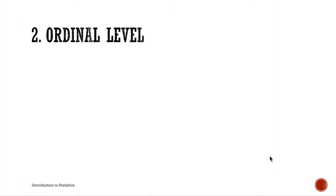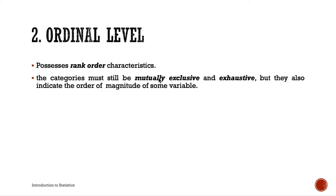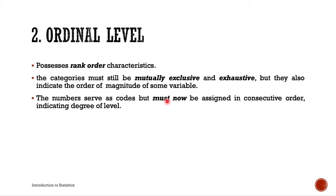Next is the ordinal level of measurement. The ordinal level possesses all the properties of the nominal level, but now it also possesses rank order characteristics. There are now ranks among categories. Categories must still be mutually exclusive and exhaustive, and they now indicate the order of magnitude in variables. Numbers serve as codes but must be assigned in consecutive order.